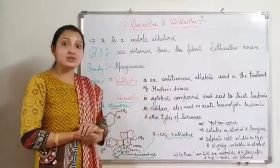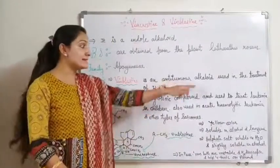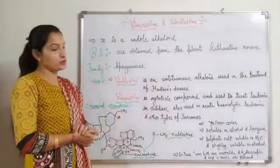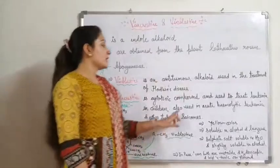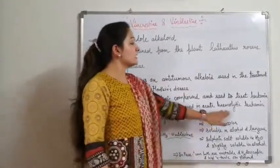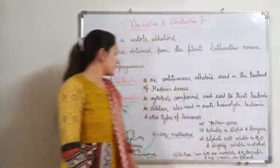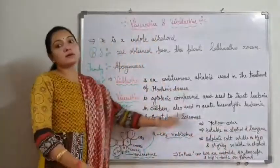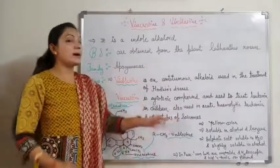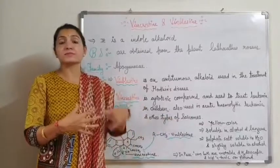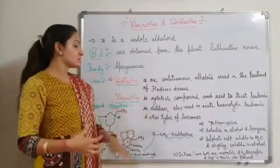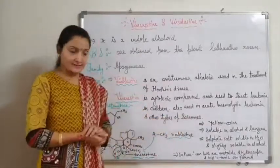Leukemia is a type of cancer present in children, and Vinblastine is used in this leukemia cancer. It is also used in acute hemolytic leukemia and other types of sarcomas. Sarcoma means cancer which is produced in tissues.